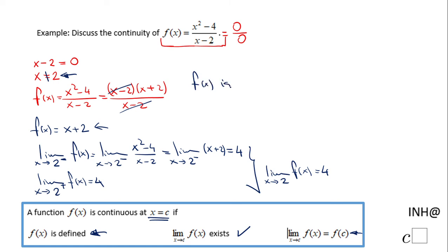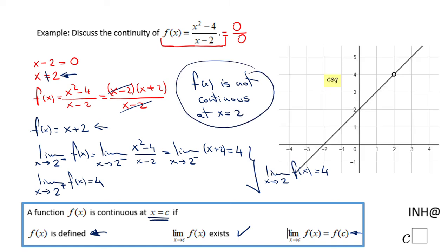Of course, you can take a look at the graph. The graph, you notice, is a line. We have x plus 2, but very important, we have a hole here.